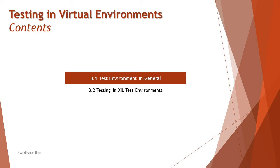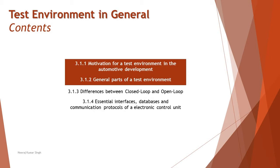As part of this chapter we have two sub-segments where we'll understand more about the basic considerations about the test environment, that is 3.1, and 3.2 testing in real test environments. Today we are covering two sub-segments of the first part: 3.1.1 motivation for test environment in automotive development, and 3.1.2 general parts of a test environment.